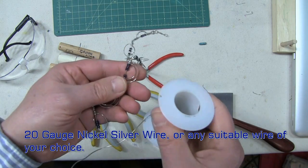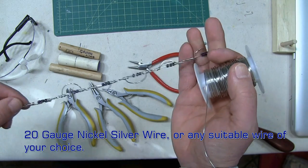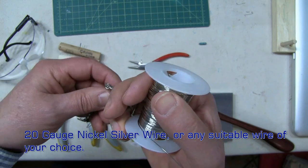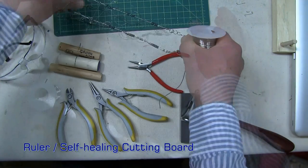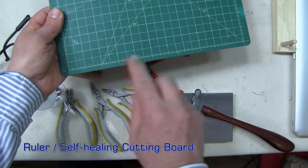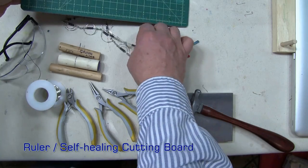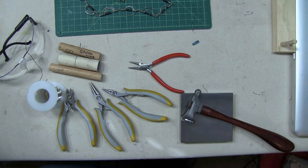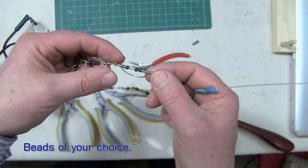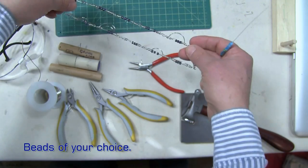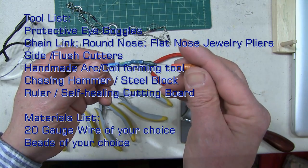The links themselves will be constructed out of 20-gauge nickel silver wire. If I was making this to be worn, I would use sterling silver wire, but I'm only making this as a display piece. I'll use a ruler, or what I like to use is a self-healing mat with ruler gradations on it for measuring our wire. I used tiny little purple seed beads, but for the one I'm going to construct in this video, I'd like to incorporate rice paper beads that I made.